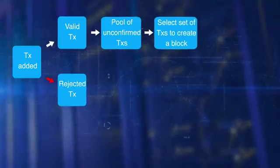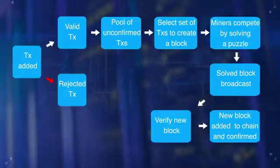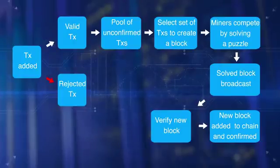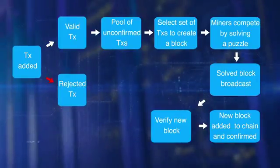Miners select a set of transactions from this pool to create a block. This creates a challenge: if every miner adds the block to the chain, there will be many branches to the chain resulting in inconsistent states. Recall that blockchain is a single, consistent, linked chain of blocks. The solution is that miners compete by solving a puzzle to determine who will earn the right to create the next block. In the case of Bitcoin blockchain, this puzzle is a computational puzzle and is CPU intensive.